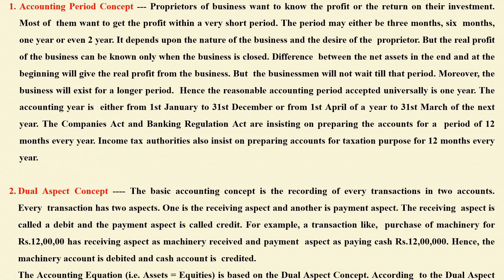Now let us study about the first one: accounting period concept. This concept means that accounts should be prepared for one year. If prepared for only three or four months, it will not reveal the real position. At the end of one year only, it is possible to know the real profit and the return on capital employed.